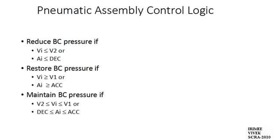The brake cylinder pressure is restored or increased if VI, the instantaneous velocity, is greater than or equal to V1, the upper threshold speed; or AI, the instantaneous acceleration, is greater than or equal to ACC, which is the fixed value of the acceleration criteria.